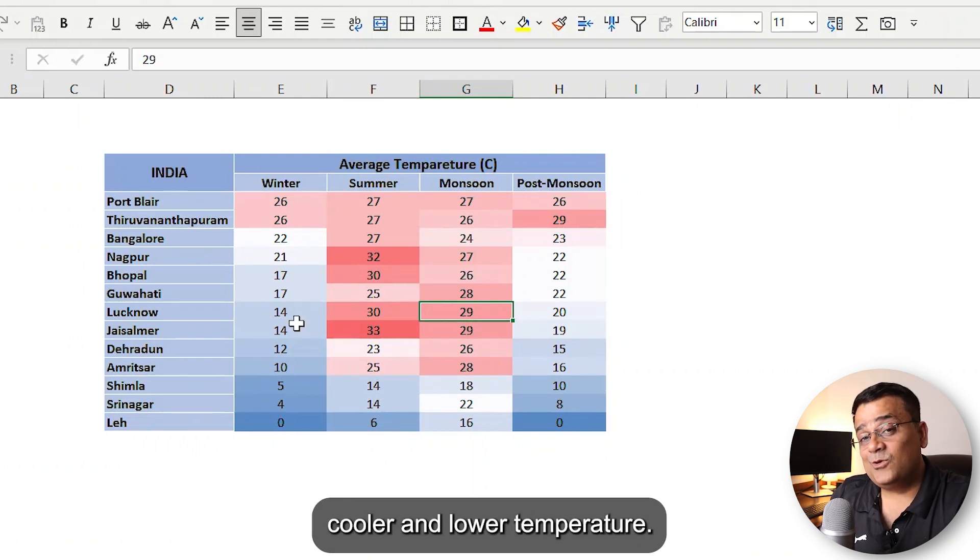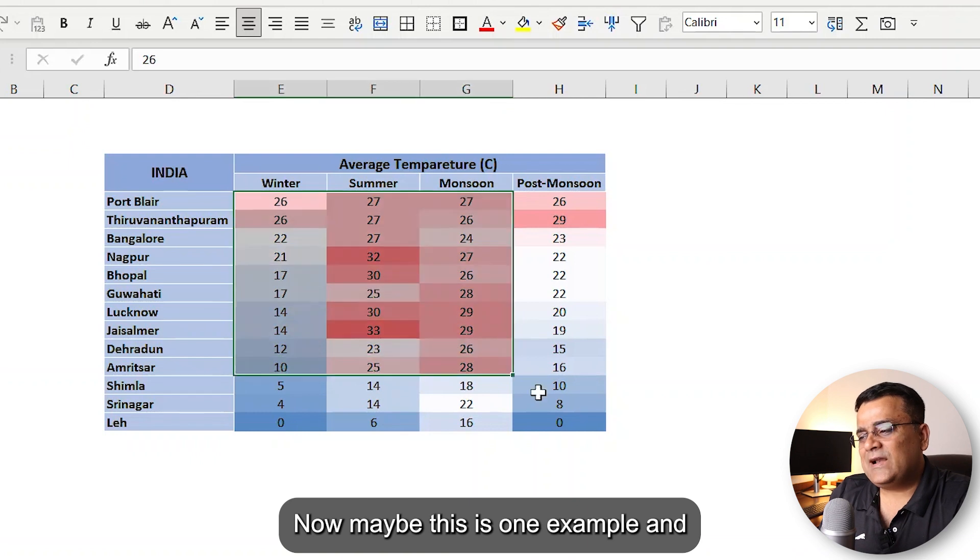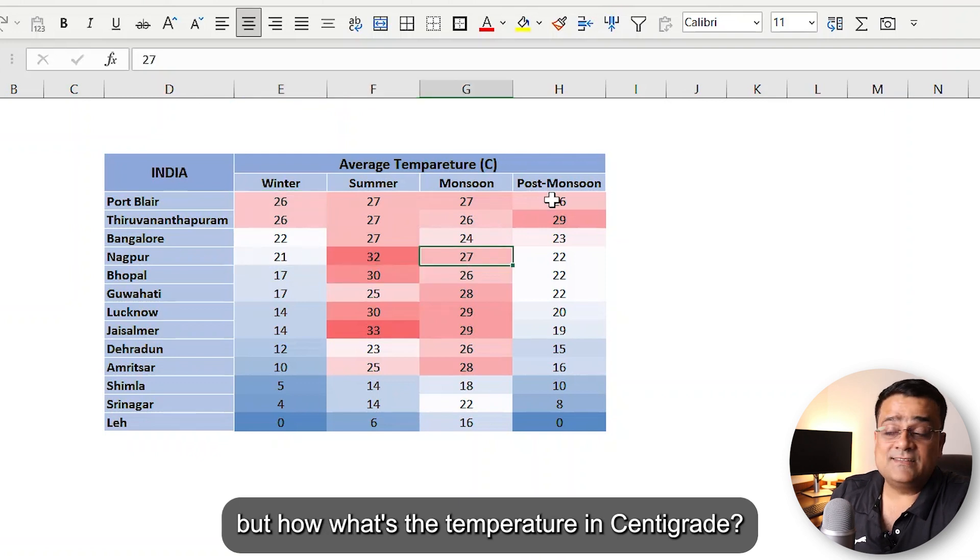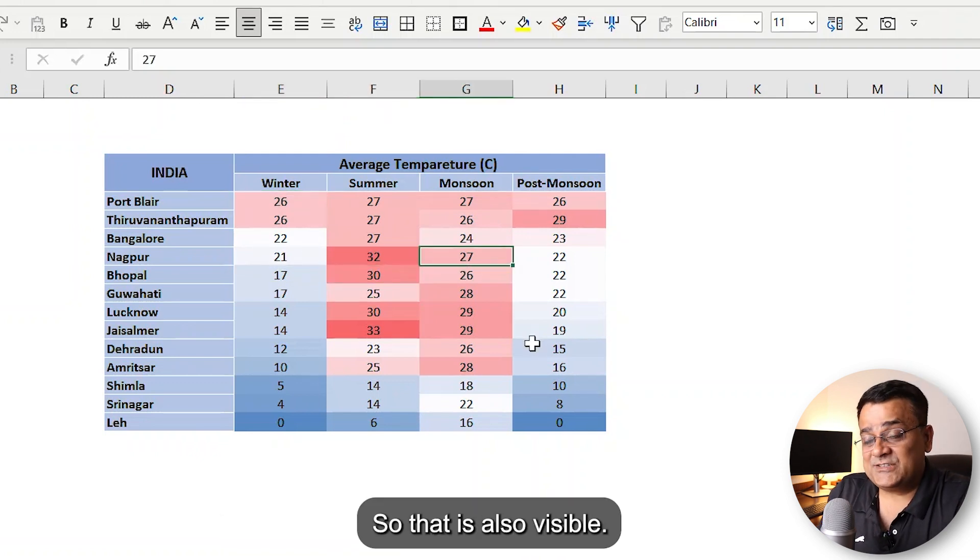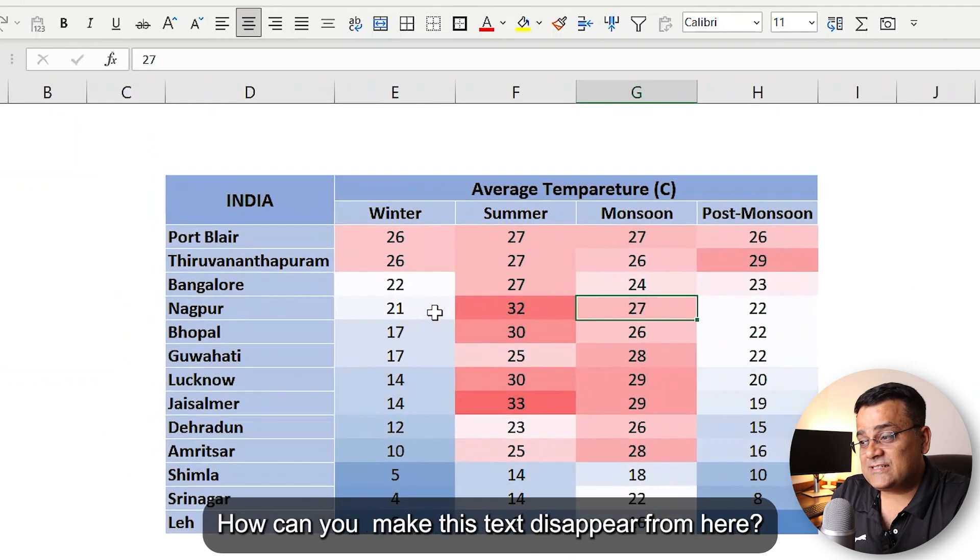Whenever it's cooler and lower temperature, I used different shades of blue. Now maybe this is one example, and here you can see these values are also visible—the temperature in centigrade is also visible. So let me show you in this particular visualization how you can make this text disappear.